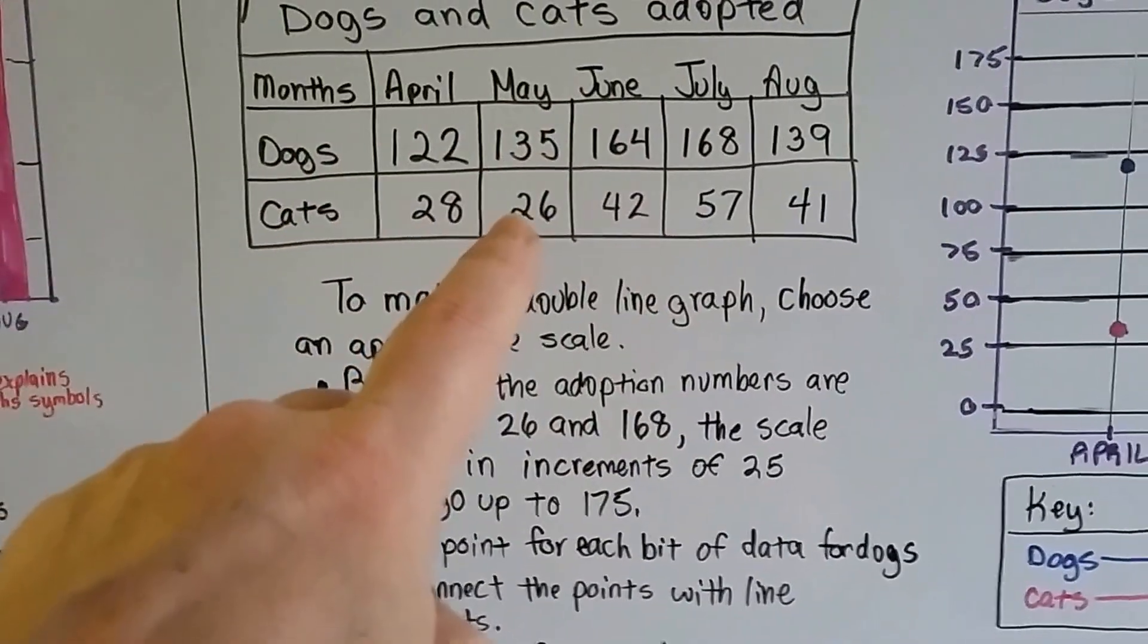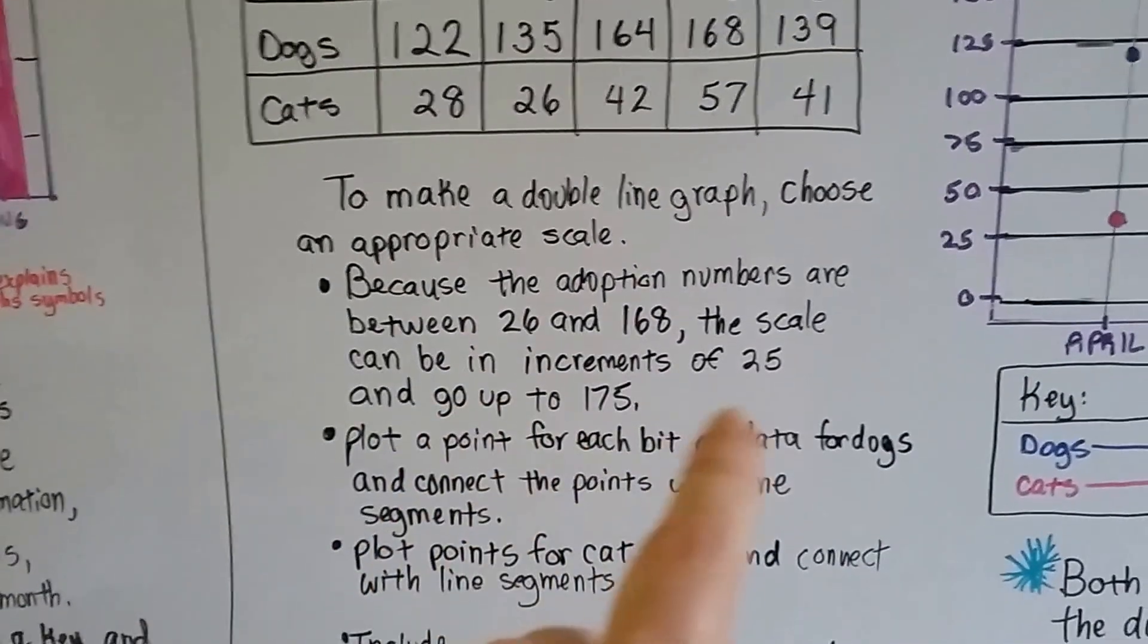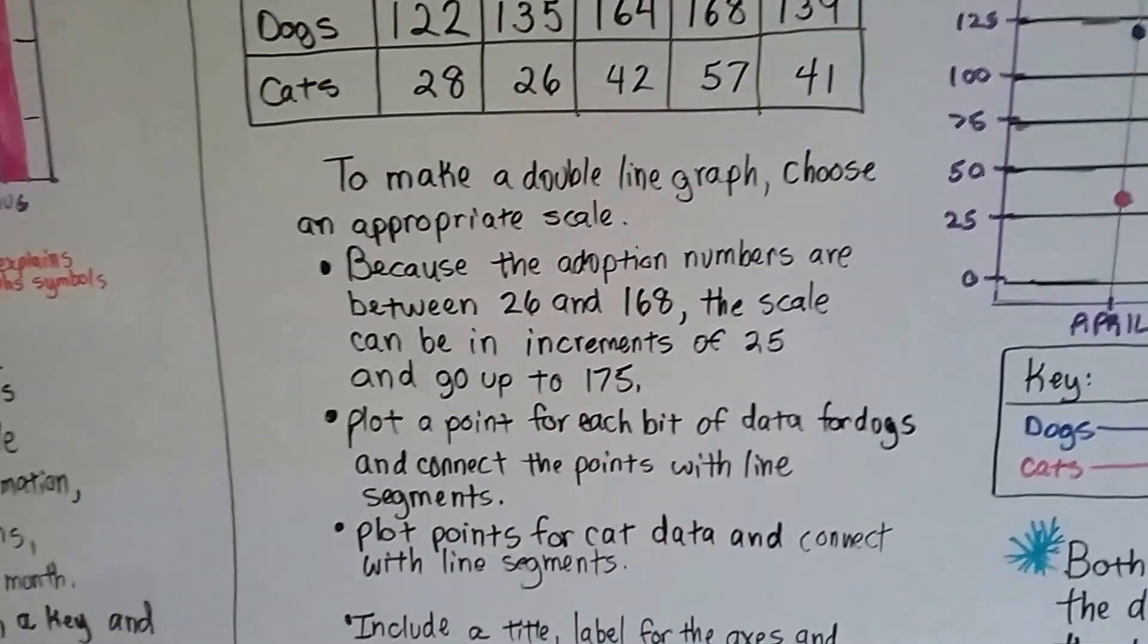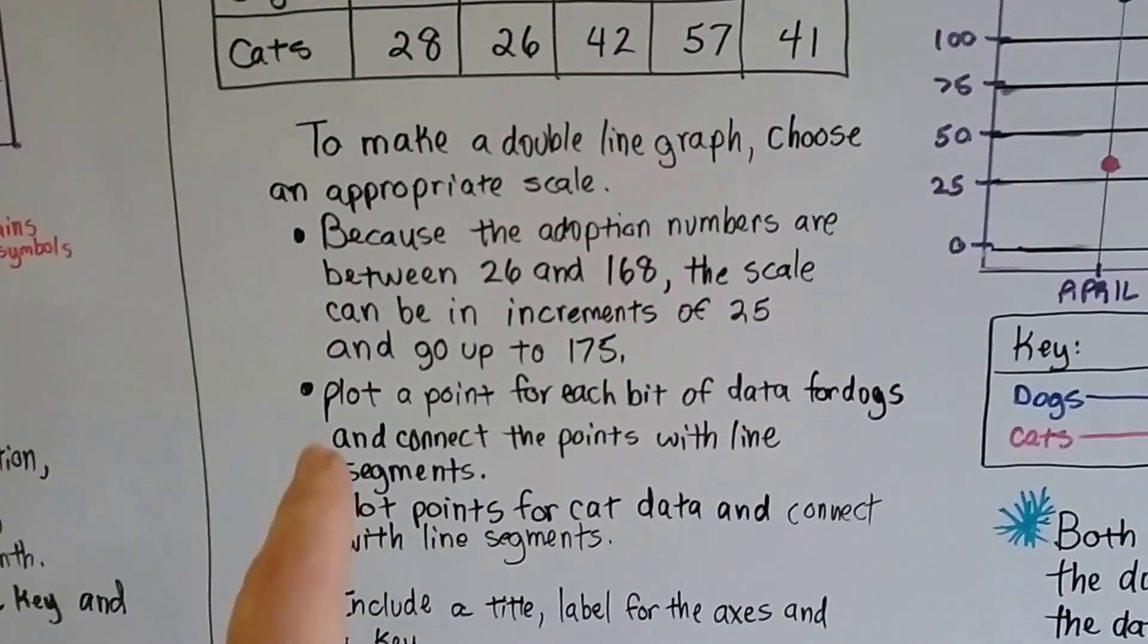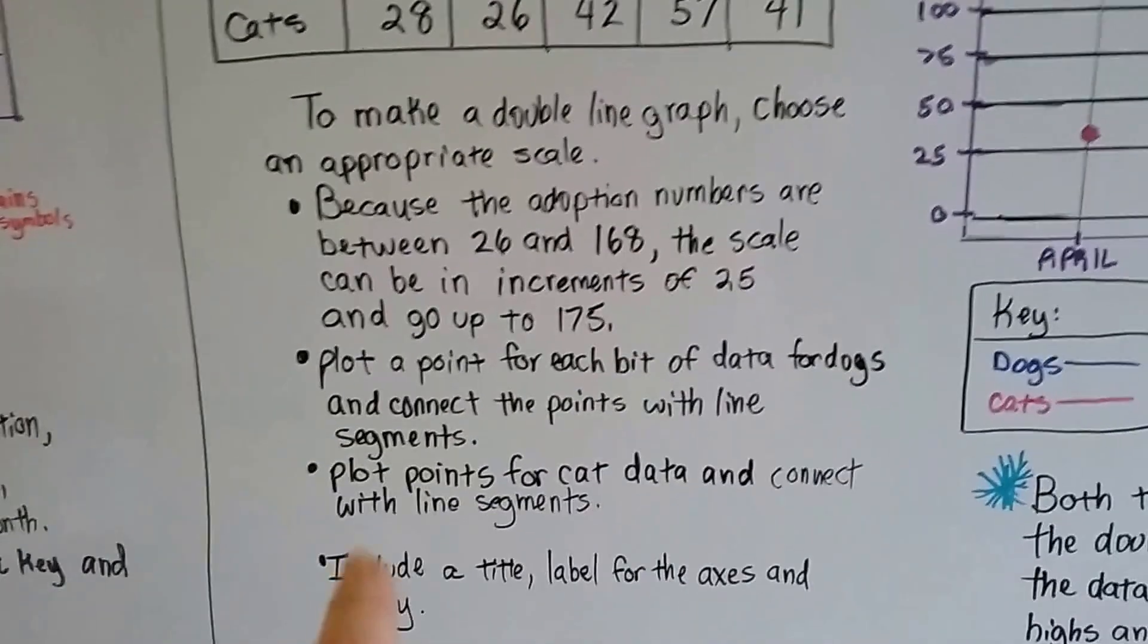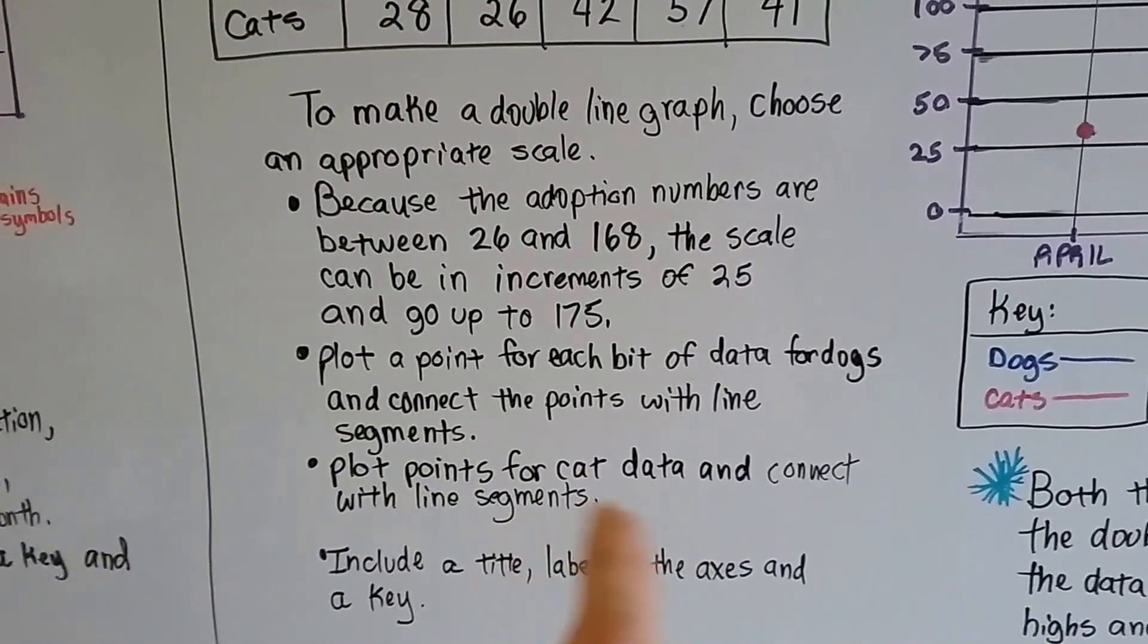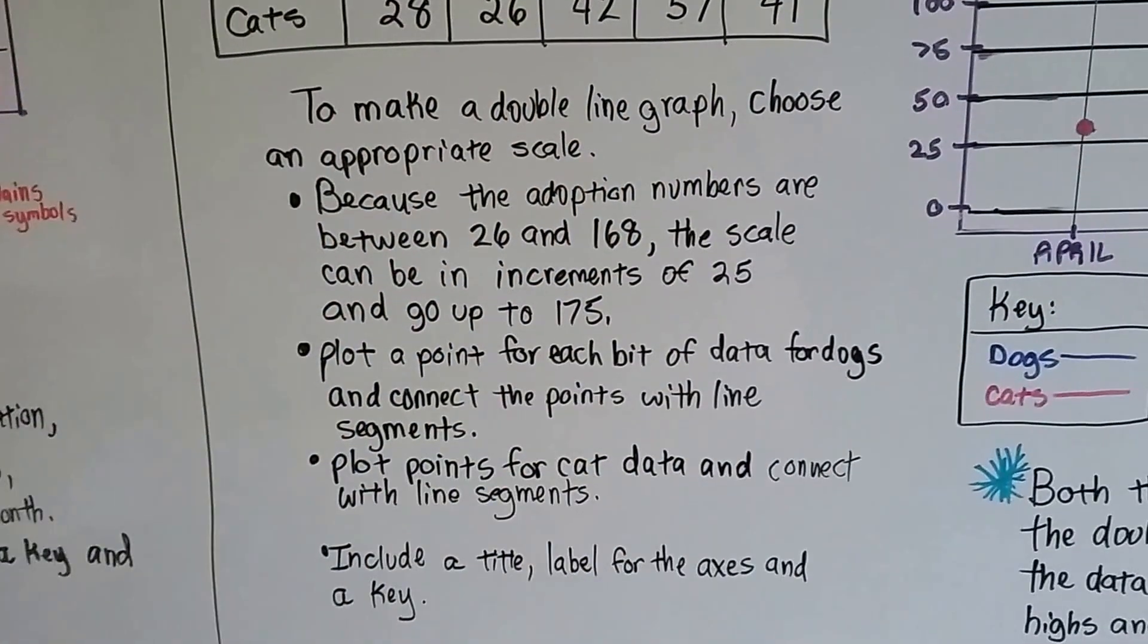Because the lowest is 26 and the highest is 168, we can go from 0 to 175. That would be a good amount because it would fit this information. You plot a point for each bit of data for the dogs and connect the points with line segments. You do the same thing for the cats.